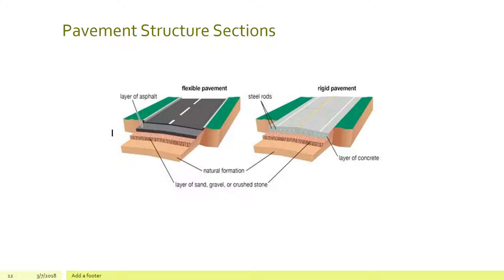Looking at two pavement structure cross-sections: the flexible pavement has a layer of asphalt over a layer of sand, gravel, or crushed stone, resting on the natural formation. The rigid pavement shows a concrete layer with rebar steel rods holding the surface together, also over a layer of sand, gravel, or crushed stone on the natural soil formation.